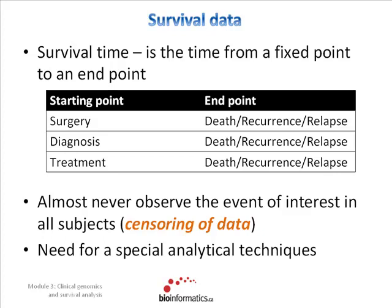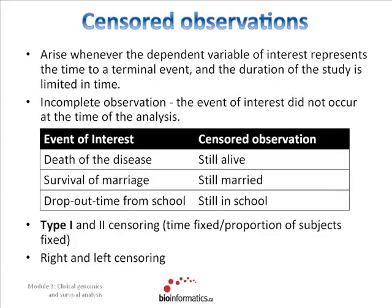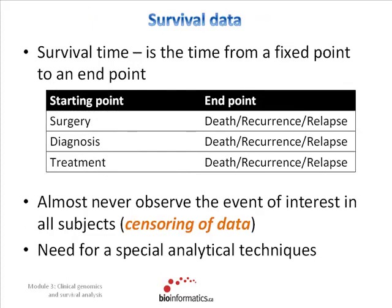Another difficulty with survival times is that they don't follow a normal distribution, so they require special analytical techniques. The censored observations arise whenever the dependent variable of interest represents the time to a terminal event, and the duration of the study is limited in time. They are incomplete observations — the event of interest did not occur at the time of analysis. In our case, the event of interest is death from the disease, and the censored observation is still alive. If the end point is relapse time, the censored observation is the patient has not relapsed yet. Very often, people do multiple analyses using different end points.